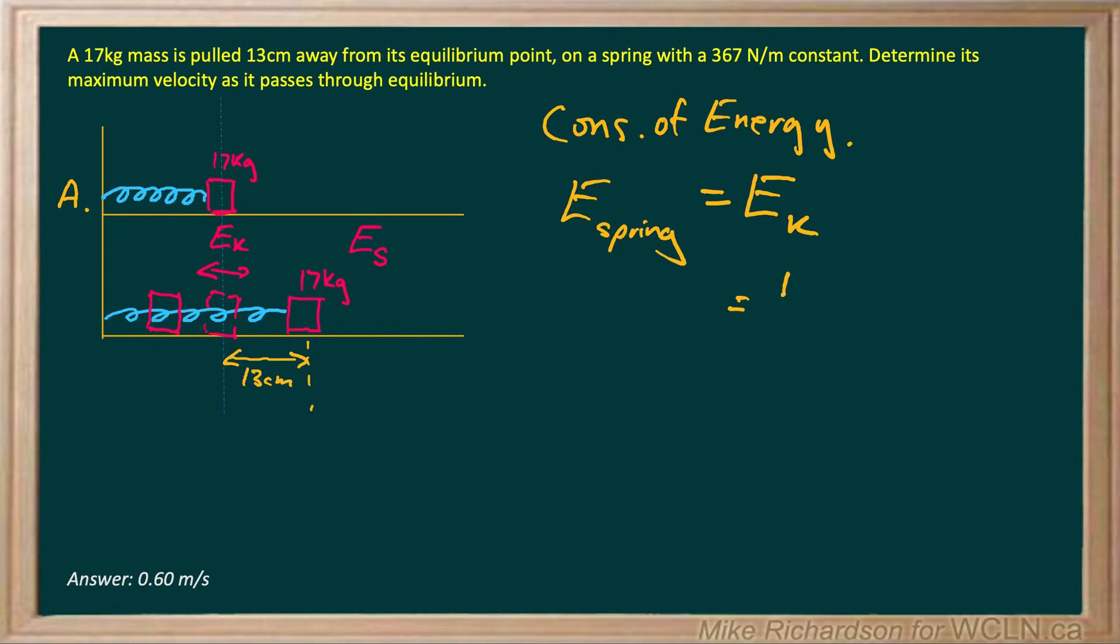So we're taking the spring's potential energy and that's all getting converted to kinetic. Now the formula for kinetic energy is always one half mv squared, and the formula for spring potential energy is one half k times your change in length of the spring, squared.